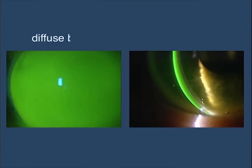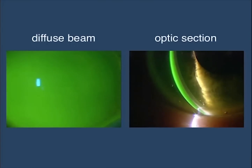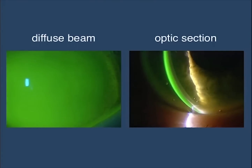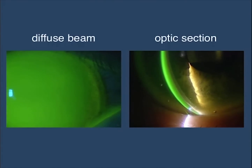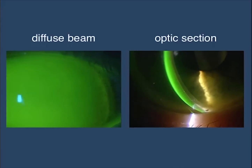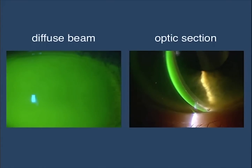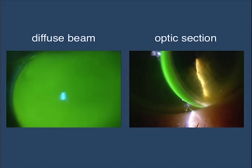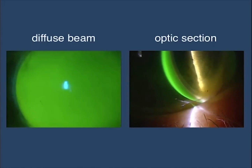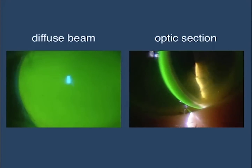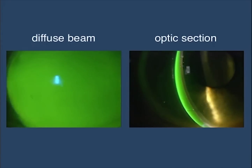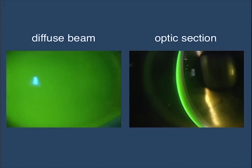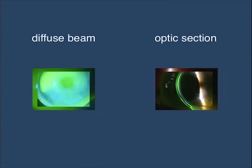This is an example of a scleral lens with significant clearance. As you can see, the fluorescein is greater than three times the thickness of the lens. In order to decrease the clearance, the sagittal depth has to be decreased. You can flatten the central curve or flatten the limbal curves — either or both of these strategies would be effective in decreasing the sagittal depth and thus the corneal clearance.